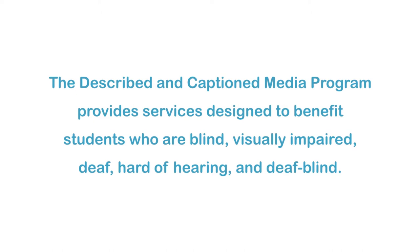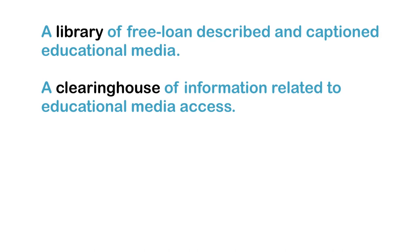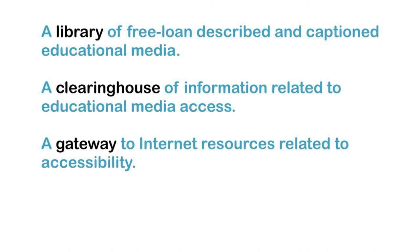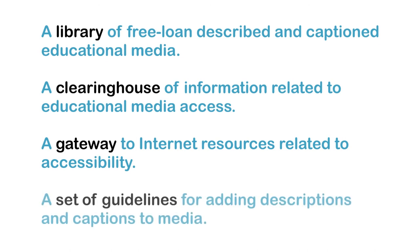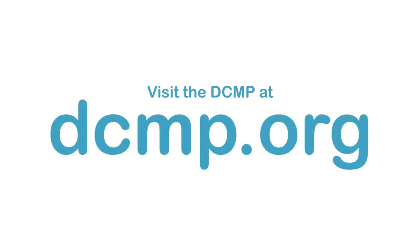The Described in Caption Media Program provides services designed to benefit students who are blind, visually impaired, deaf, hard of hearing, and deafblind. These services include a library of free loan described and captioned educational media, a clearinghouse of information related to educational media access, a gateway to Internet resources related to accessibility, and a set of guidelines for adding descriptions and captions to media. There are no user registration or service fees. Visit the DCMP at DCMP.org.